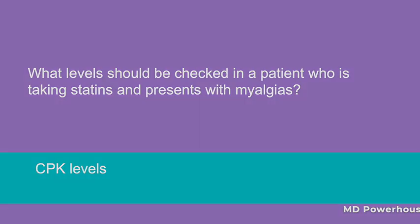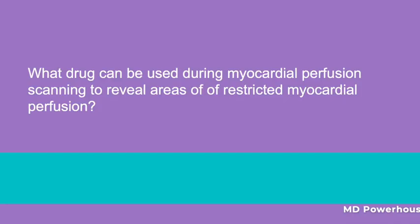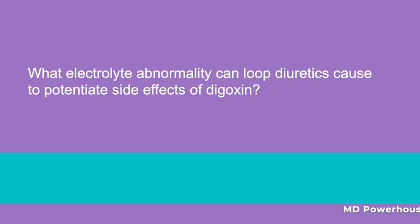What drug can be used during myocardial perfusion scanning to reveal areas of restricted myocardial perfusion? Dipyridamole. Recall that the redistribution of coronary blood flow to non-diseased segments induced by this drug is called the coronary steal phenomenon.